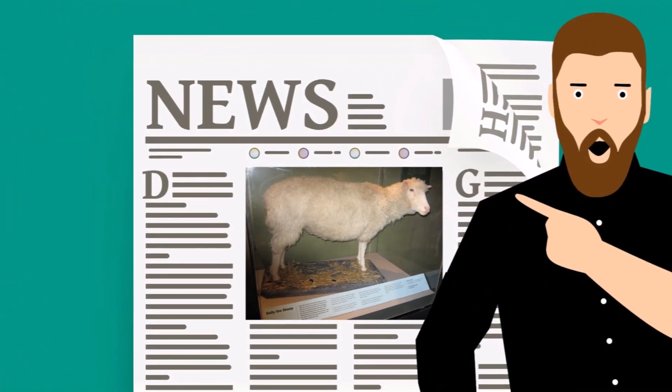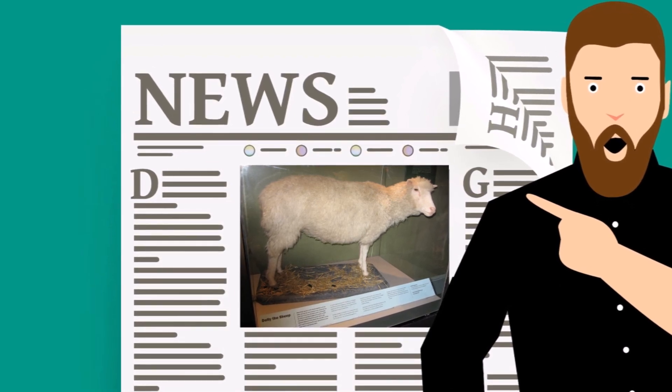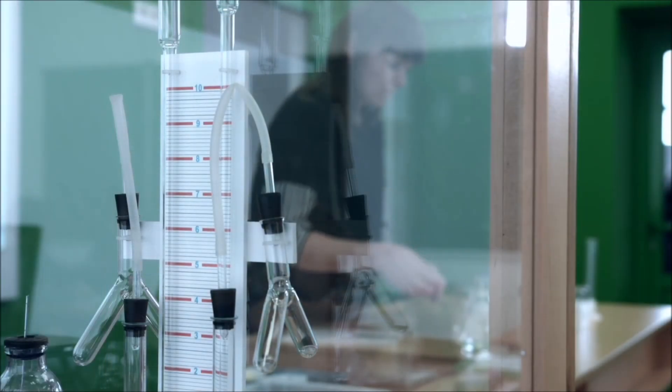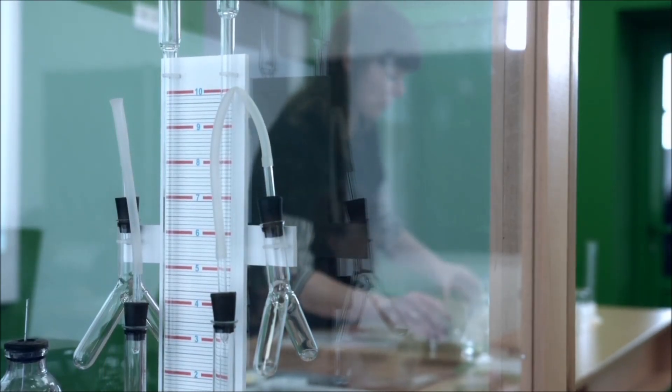Dolly lived for seven years, developing a common sheep form of cancer not related to being a clone. Further experiments with pigs, cats, dogs, horses, and cattle were successful,